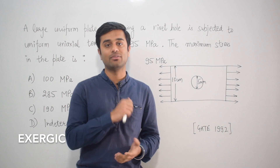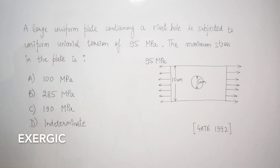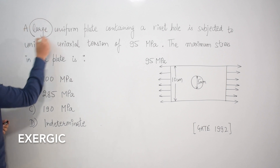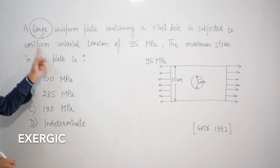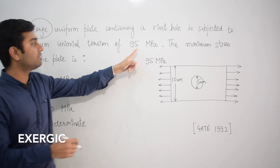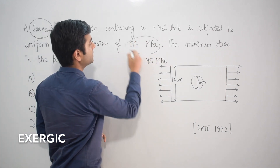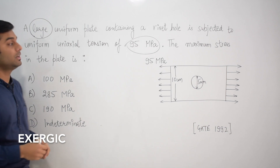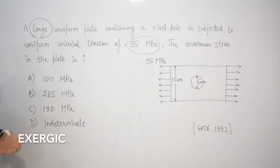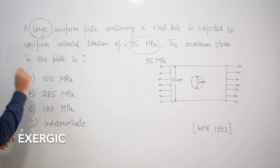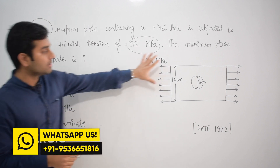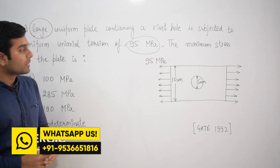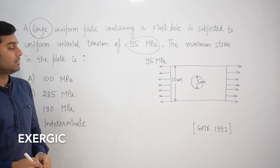The question says that a large uniform plate containing a rivet hole, as you can see in the diagram, is subjected to a uniform uniaxial tension of 95 MPa. The question asks: what is the maximum stress in the plate? Four options are given: 100 MPa, 285 MPa, 190 MPa, and indeterminate.